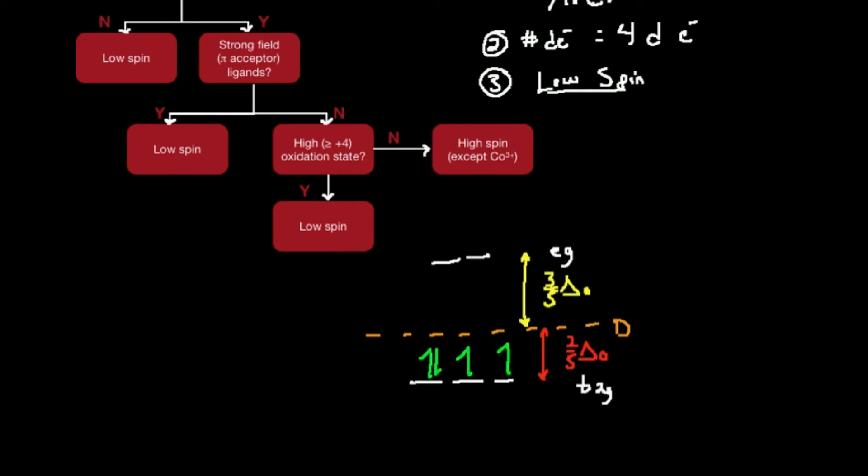If you go back to the last video where we looked at that iron complex, that was high spin. I mentioned that in high spin complexes, you never worry about pairing energy. Now we're doing low spin. So we do worry about pairing energy. Pairing energy is designated by the symbol P.